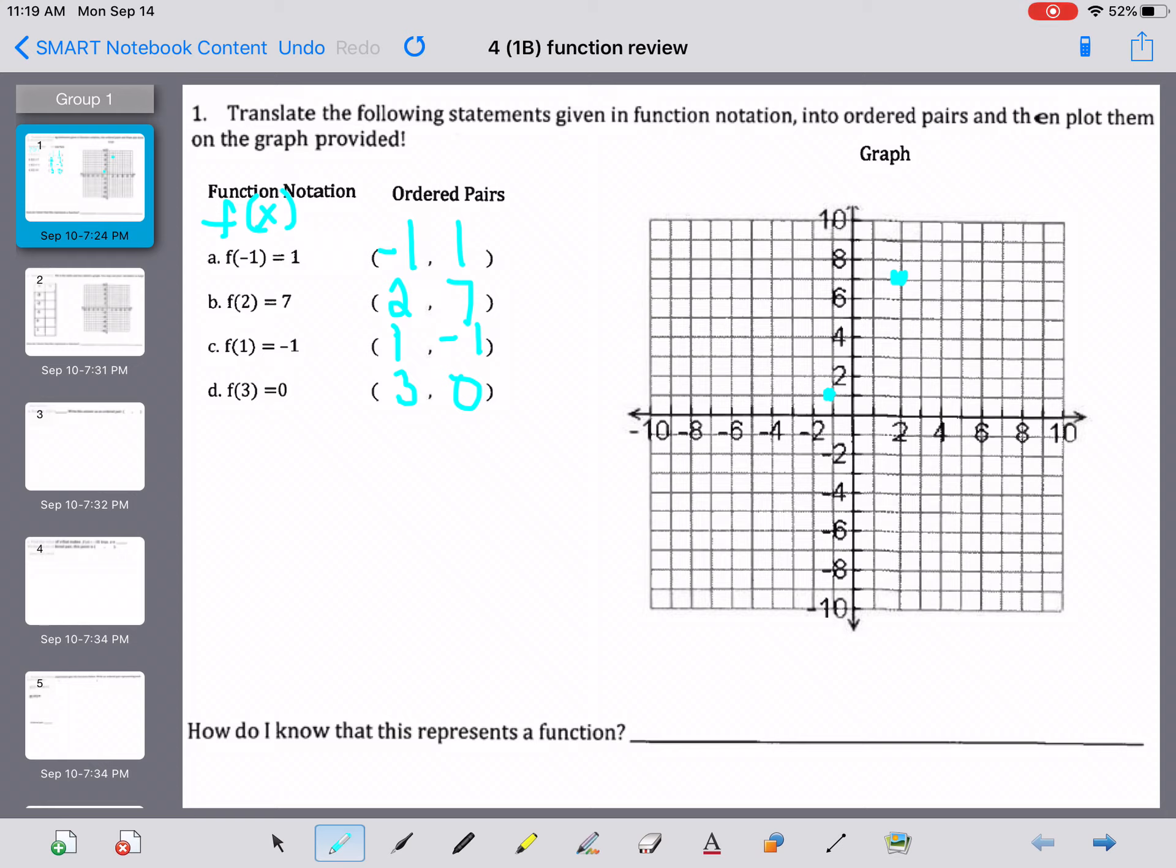For 1, negative 1, we're going to go 1 to the right counting from 0, and then down 1. And finally 3, 0, we're going to go 3 spaces right and 0 spaces up. We started by counting from 0.